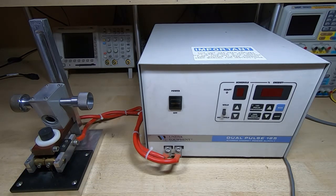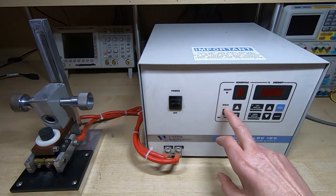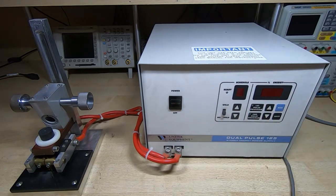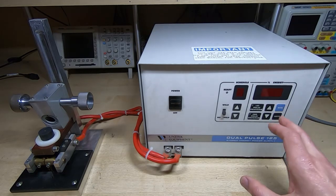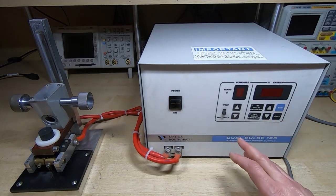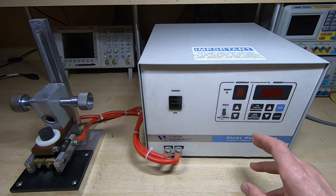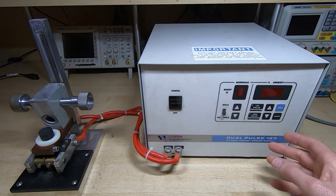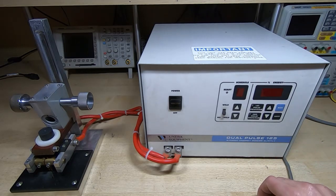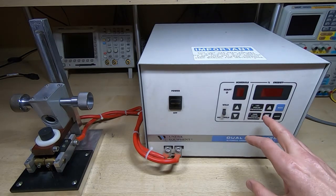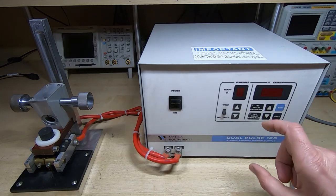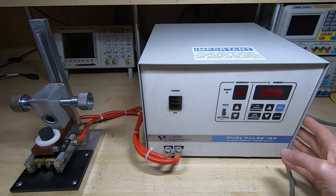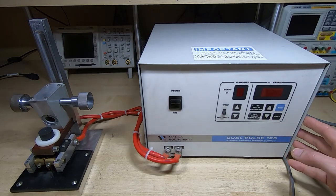So when you switch it on you have the ability to program it, and normally you'll program it to provide two pulses rather than just one. The first pulse is to prepare and clean the joint. The second pulse is to carry out the actual spot weld. And you can program the duration and peak current of both pulses.